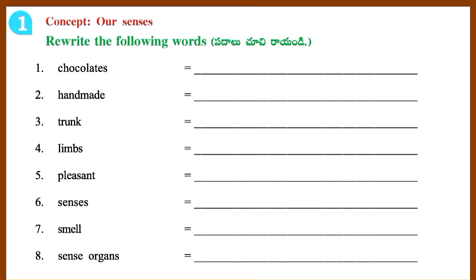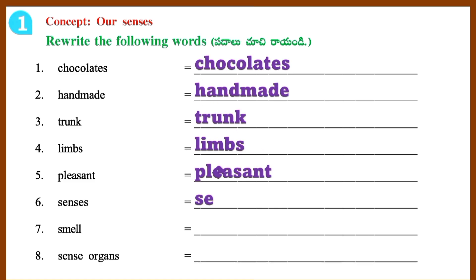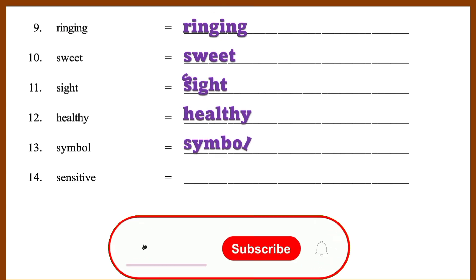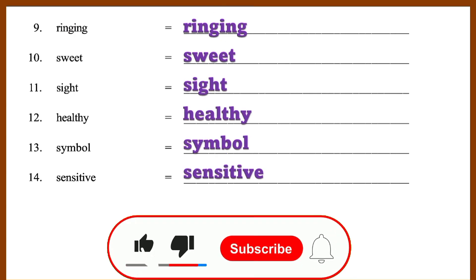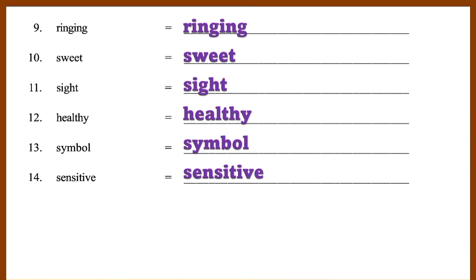Rewrite the following words: Chocolate, Handmade, Trunk, Limbs, Pleasant, Senses, Smells, Sense Organs, Ringing, Sweet, Sight, Healthy, Symbol, Sensitive.